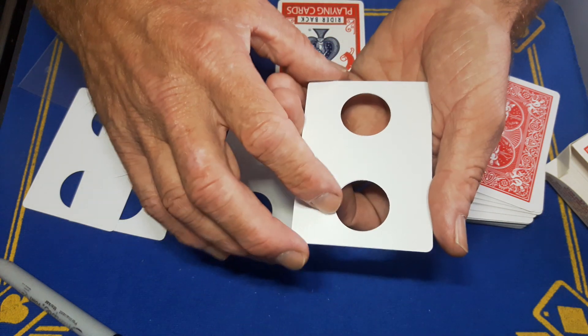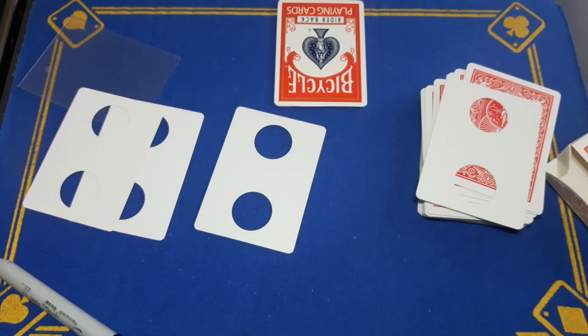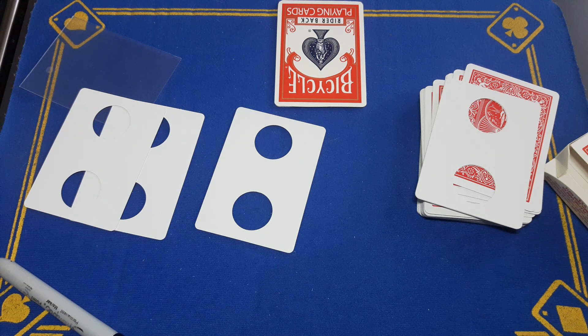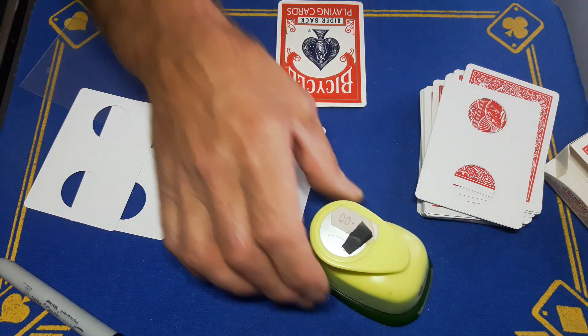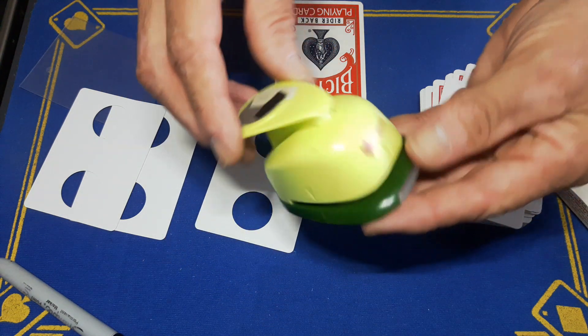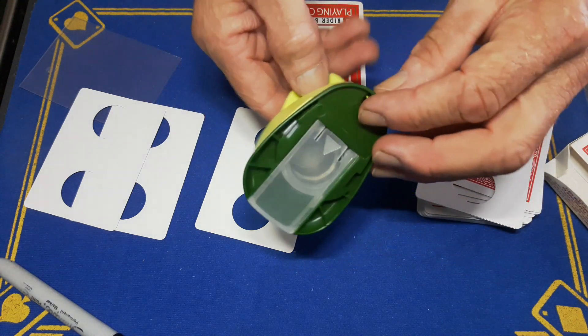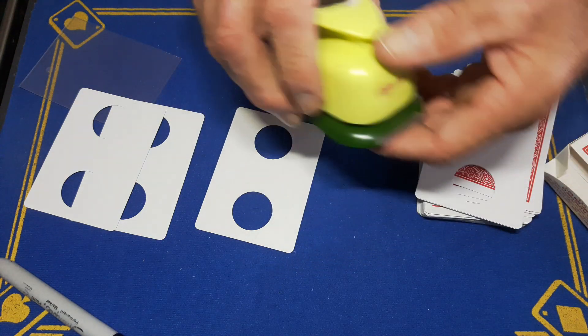Let me just show you the hole punch. This is the hole punch. You can find these on Amazon, eBay, get it from any good stationer. You'll find these somewhere on the internet, just a decent hole punch.